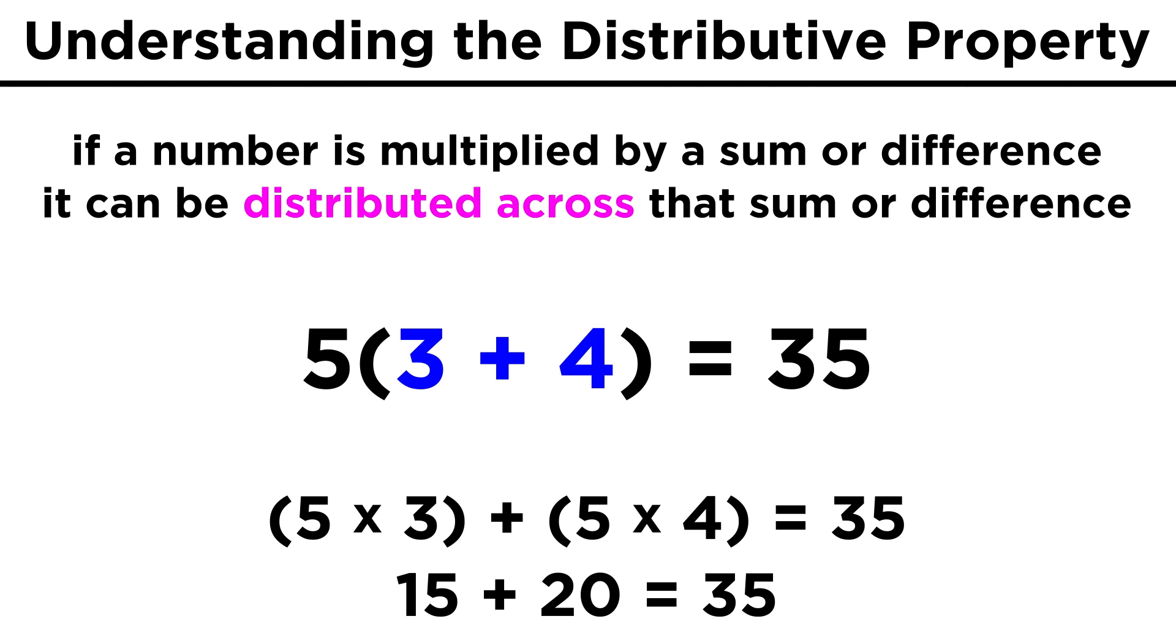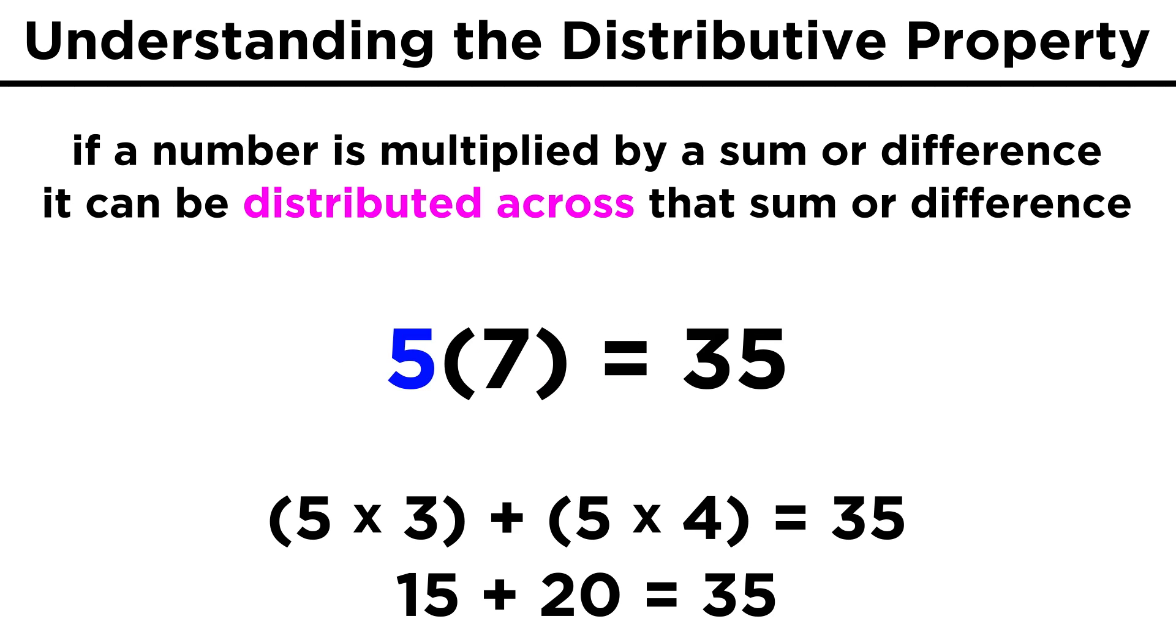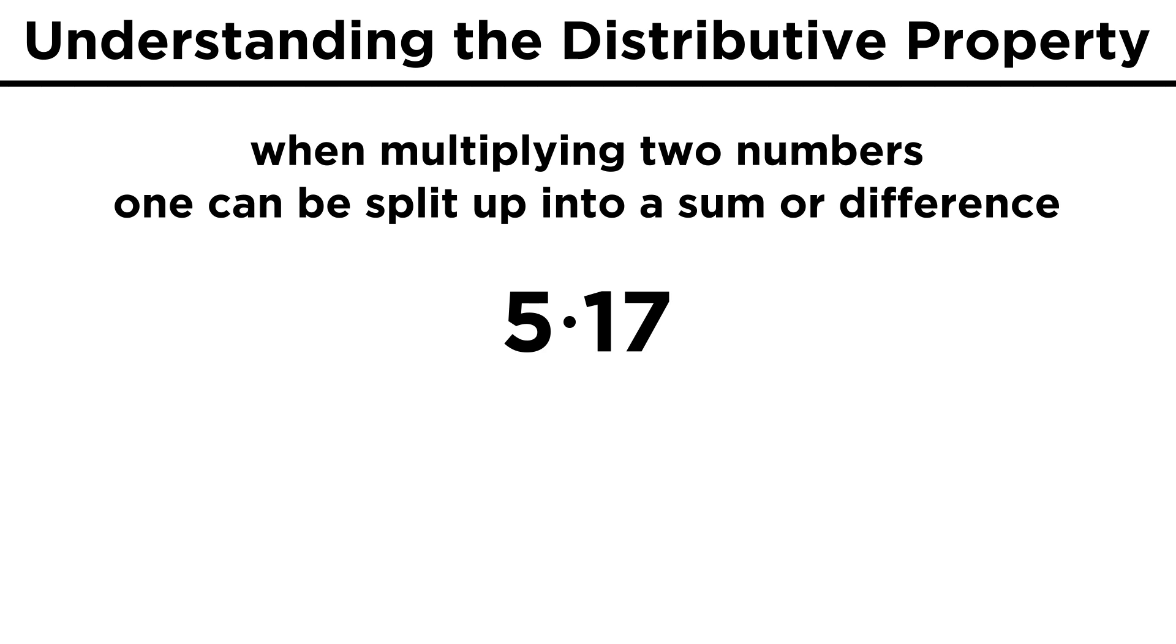So whether we add the numbers in the parentheses first, and then multiply by the other number, or distribute the number across the sum, we will get the same result, and that is the essence of the distributive property, which will be very important once we get to algebra. We can even use this property in reverse.